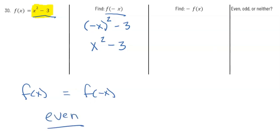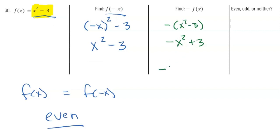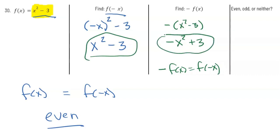Let's also check -f(x) to rule out odd. Taking f(x) = x² - 3 and putting a negative in front gives -x² + 3. That is not equal to f(-x) = x² - 3, nor equal to f(x), so the function is definitely not odd. The answer is that x² - 3 is an even function.